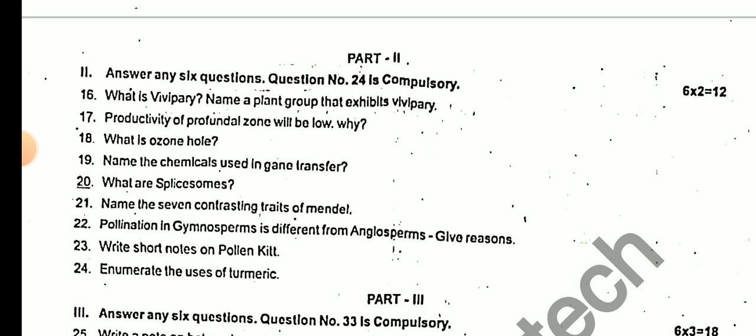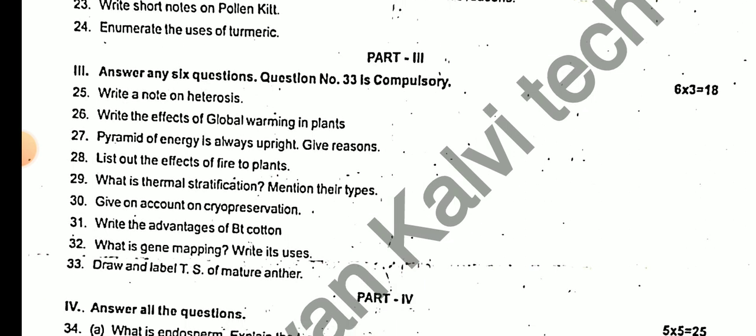Pollination in gymnosperm differs from angiosperm — give the reason. Write a short note on pollen kit. Enumerate the uses of dermarcation. Write the uses and draw and label the TS of a mature anther.